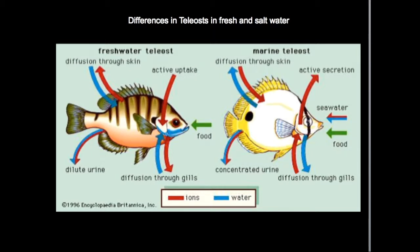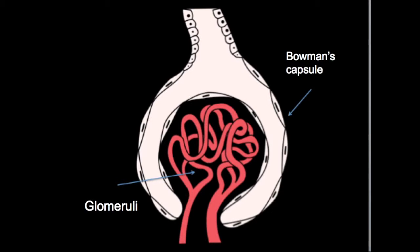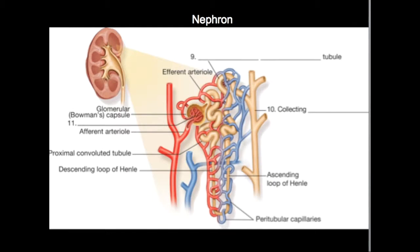Freshwater teleosts have also adapted modified kidneys which have multiple glomeruli. Glomeruli are the clusters of capillaries found in the Bowman's capsule in a nephron, which is the functional unit or tissue of a kidney. Freshwater fish need to have very large kidneys, and they have adapted to have large kidneys so that they can constantly filter all this water out of their blood that is constantly rushing in through their skin.